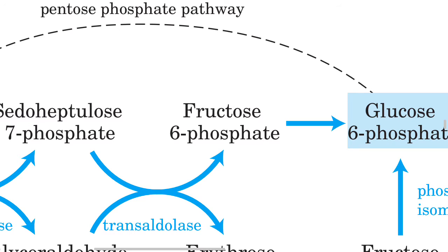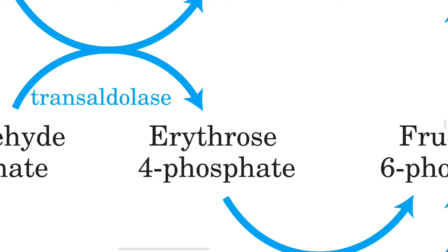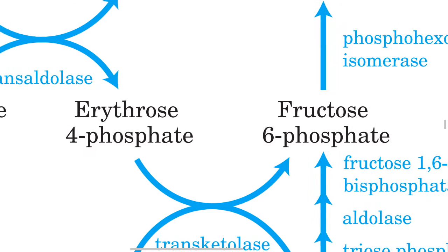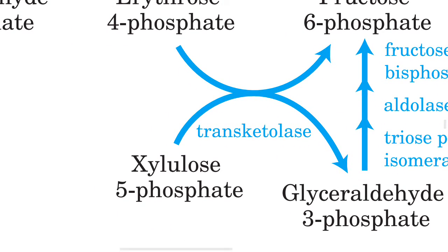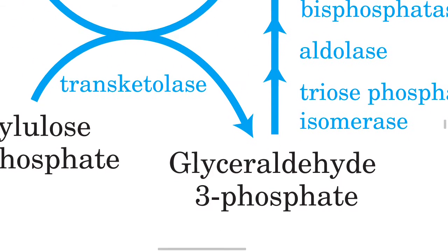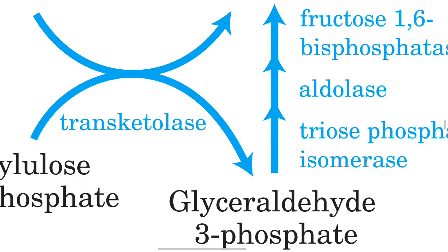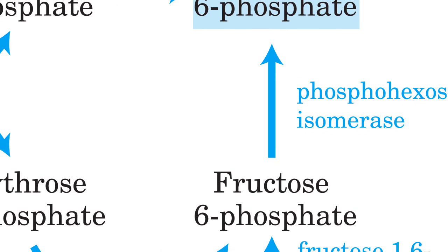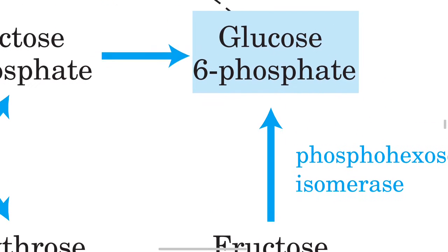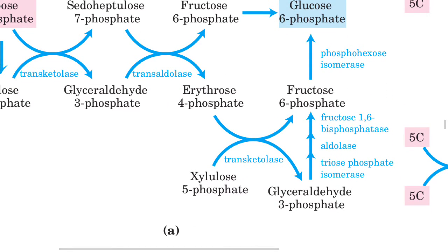Glyceraldehyde-3-phosphate and sedoheptulose-7-phosphate then react via the enzyme transaldolase. This condensation reaction involves 10 carbon units total, producing a 6-carbon fructose-6-phosphate and a 4-carbon erythrose-4-phosphate. Fructose-6-phosphate can then be converted to glucose-6-phosphate by enzyme phosphoglucoisomerase, via the reversible pathways of glycolysis and gluconeogenesis.